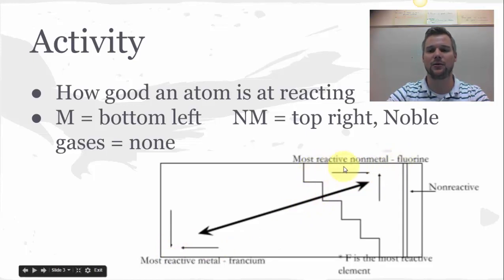If you're a non-metal closer to fluorine, either to the right or farther up, you're going to be more reactive. If you're a metal closer to francium, either down or further left, you're going to be more reactive. But the noble gases are unreactive. Out of all the atoms in the periodic table, fluorine is the most reactive, but for the metals, the most reactive metal would be francium.